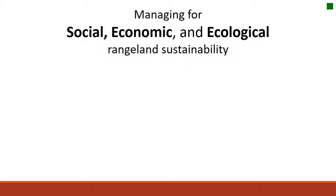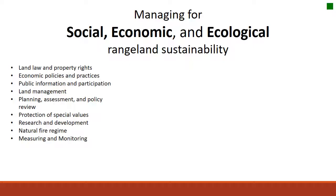This information is taken from a paper called 'Putting the Pieces Together: Assessing Social, Ecological, and Economical Rangeland Sustainability,' which I'll link on the webpage. When we think about social aspects to rangeland sustainability, this might include things like the laws or property rights of a particular piece of property, economic policies and practices, land management practices, protection of special values such as open space, and the natural fire regime and its social impacts.